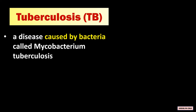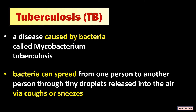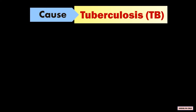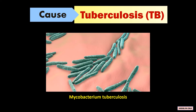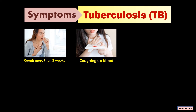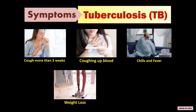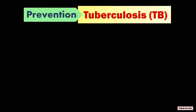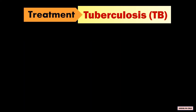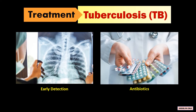Tuberculosis, or TB, is a disease caused by bacteria called Mycobacterium tuberculosis. The bacteria can spread from one person to another through tiny droplets released into the air via coughs or sneezes. These are the slow-growing Mycobacterium tuberculosis. The symptoms are a cough that lasts for more than three weeks, coughing of blood, chills and fever, weight loss, and chest pain. Physical distancing, good ventilation, and good hygiene are the prevention. With early detection and appropriate antibiotics, TB is treatable.